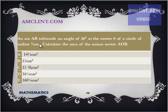An arc AB subtends an angle of 36 degrees at the center O of a circle of radius 7 cm. Calculate the area of the minor sector AOB.